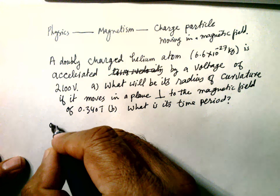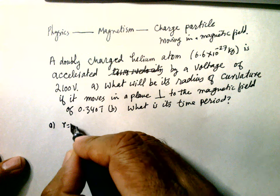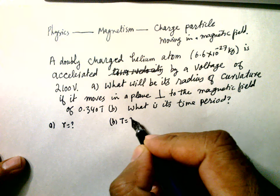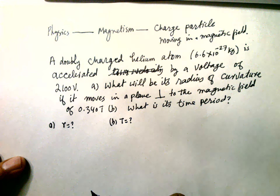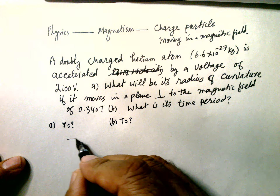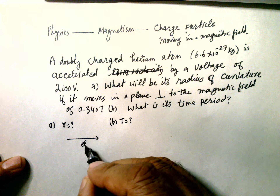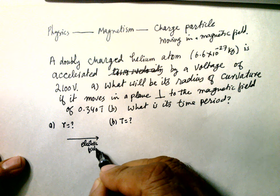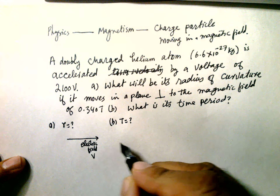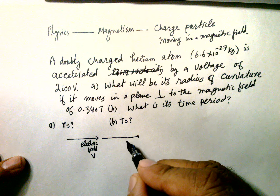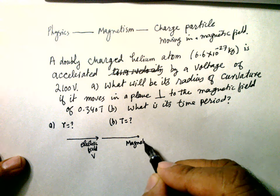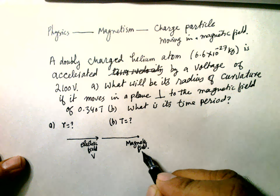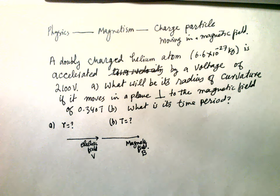For part A, we have to find the radius of curvature. For part B, we have to find its time period. This particle is moving first in an electric field under a potential, and then it is moving in a magnetic field of field strength B.